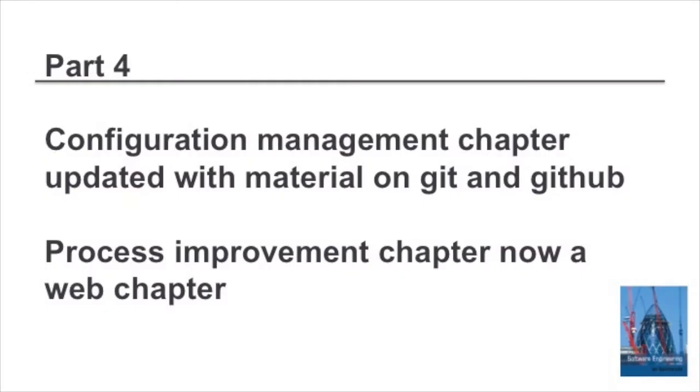In part four on software management there have been two important changes. I've updated the chapter on configuration management to reflect the widespread use of Git and GitHub as distributed configuration management systems, and I contrast these with repository-based systems such as Subversion. And I've dropped the chapter on process improvement. This is a topic that was particularly important in the 1990s and in the early years of the 21st century, but now seems to get much less attention within organisations where agility is seen as the way to improve processes.